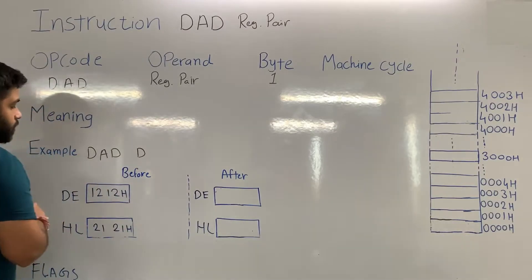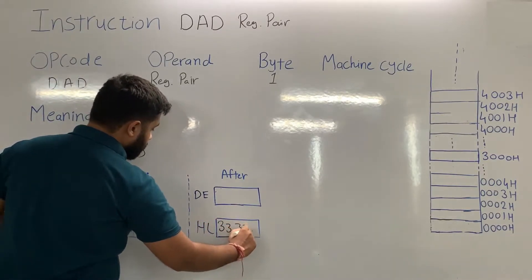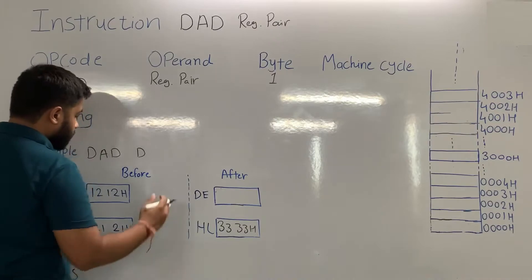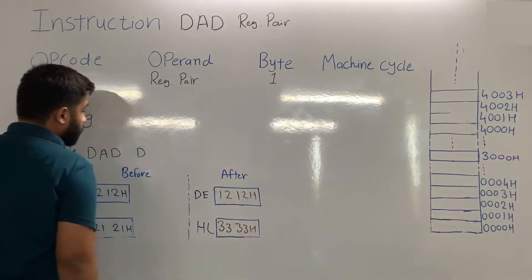When this instruction is executed, the content of D pair will be added with HL pair and answer will be stored in the HL pair. So what will be the answer in the HL pair? In the answer, we will get 3333H. The content of D pair will remain 1212H.